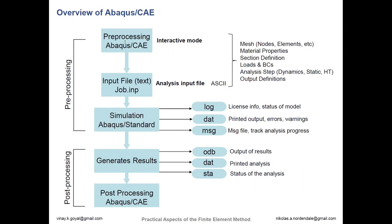Abaqus CAE is an interactive software where you can work with CAD, visually see all of your mesh, material properties, sections, loads, boundary conditions, and choose your output. Once you've created this, Abaqus will create an input file or a .inp file. This is a text file, easy to read in a basic text file editor, but it is a command sent to the solver. The solver will use the input file as instructions for how to complete the analysis. There are other types of files including the log file, which includes license info and status of your model, especially if you're running simulations on big data clusters or supercomputers. There's a DAT file, which gives you information about the output and any errors or warnings.